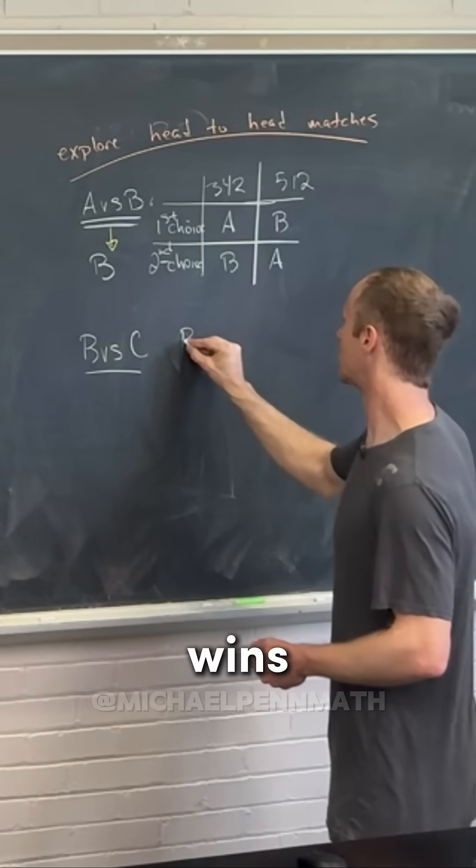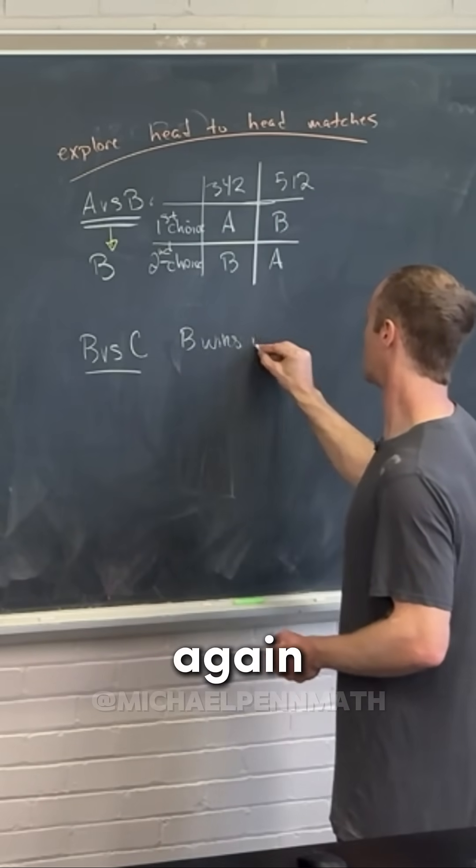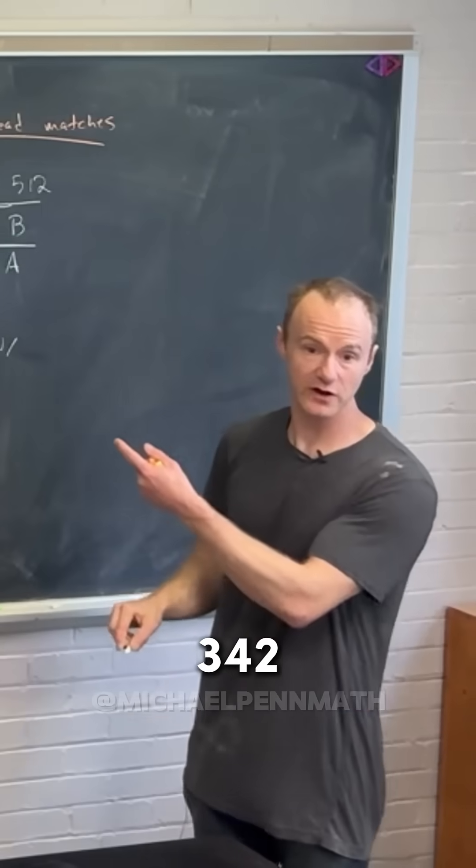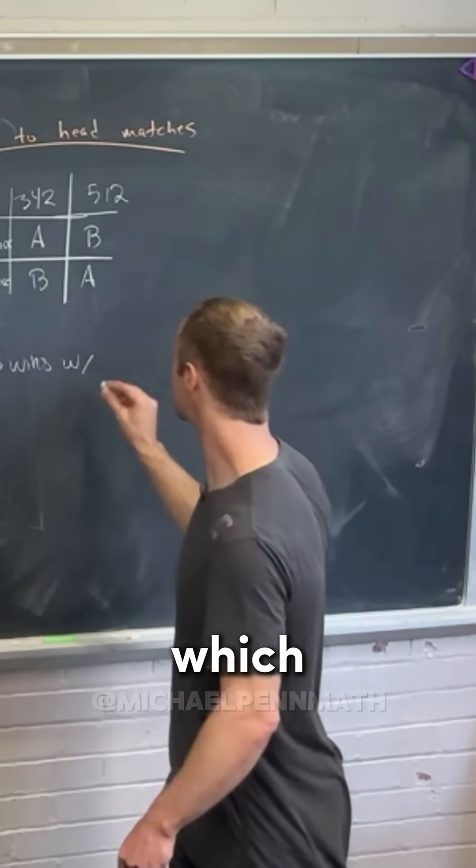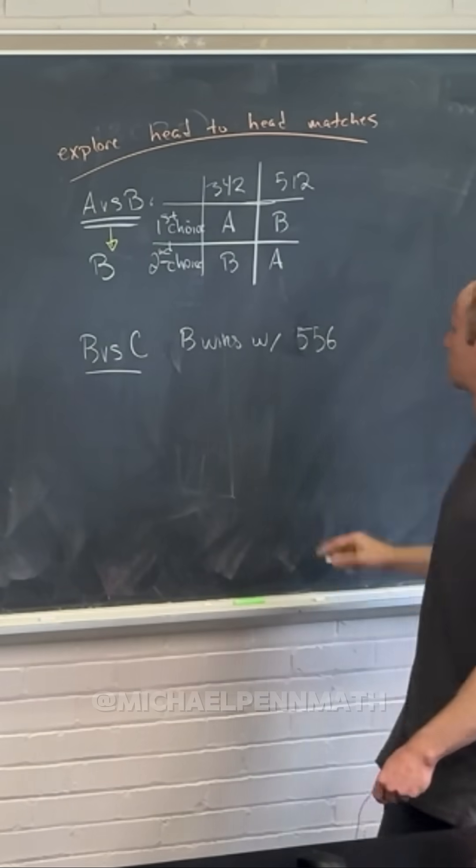So B wins again. With how many votes? Well, 342 plus 214, which is 556 votes.